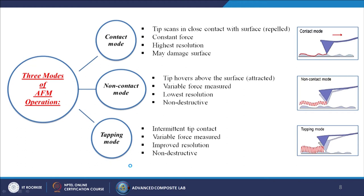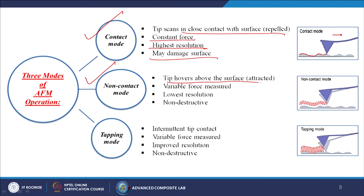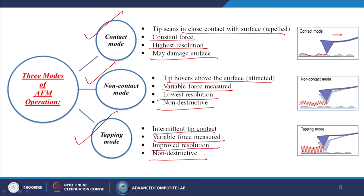There are three modes of AFM operation. First, contact mode: the probe touches the surface, the tip scans in close contact, repelled at constant force — highest resolution but may damage the surface. Second, non-contact mode: the tip hovers above the surface, attracted with variable force measured — lowest resolution, non-destructive. Third, tapping mode or semi-contact mode: intermittent tip contact with variable force measured — improved resolution and non-destructive.